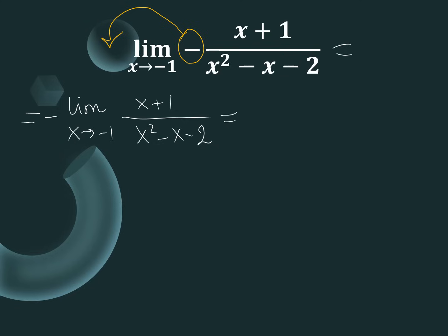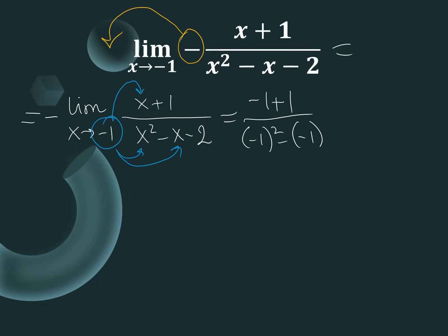Now we substitute x equals negative 1 directly. We get negative 1 plus 1 over negative 1 squared minus negative 1 minus 2. Evaluating gives us 0 over 0 — undefined. We don't know what 0 over 0 means, so we must continue.